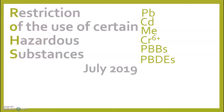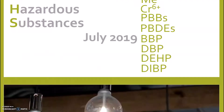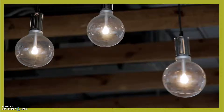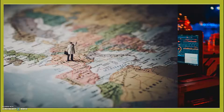From July 2019, four phthalates are also added to the restricted list. These are BBP, DBP, DEHP, and DIBP. These restrictions apply to electrical and electronic equipment placed into the EU market.